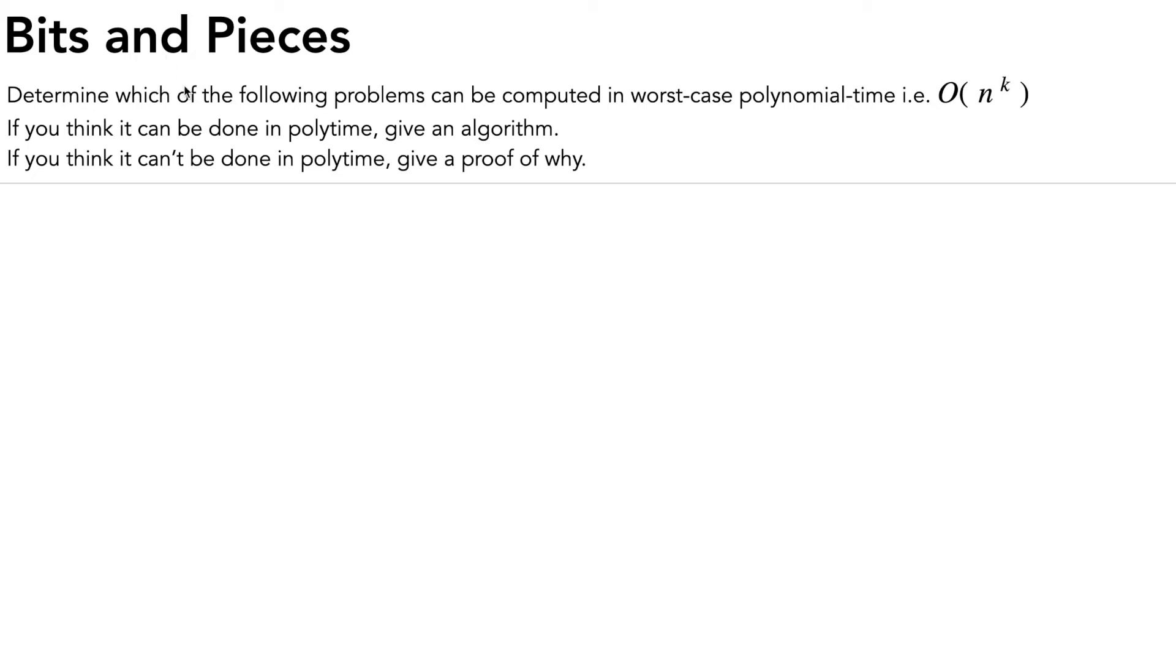Bits and pieces. Determine which of the following problems can be computed in worst-case polynomial time, i.e. O of little n to the k. If you think it can be done in polytime, give an algorithm for it, and if you think it can't be done in polytime, give a proof for why.